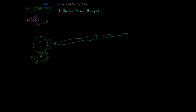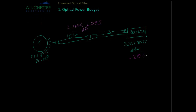And then over on the right hand side of the drawing here we have a receiver. The important parameter here is the sensitivity. With a typical receiver sensitivity of minus 20 dBm and a typical output power of minus 6 dBm.